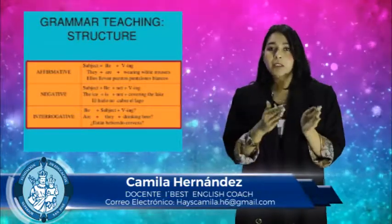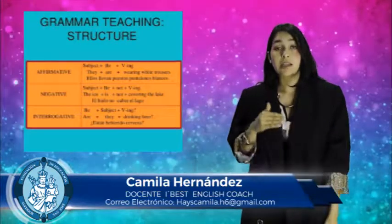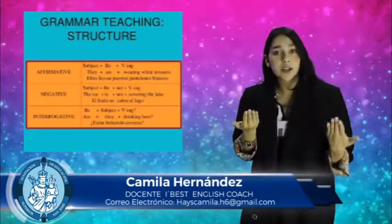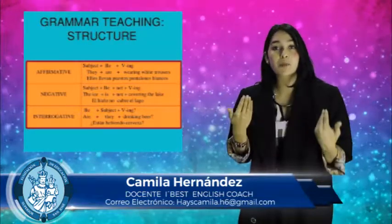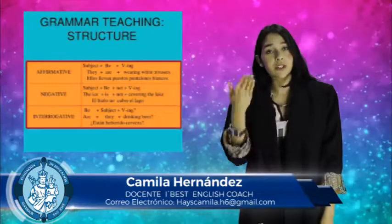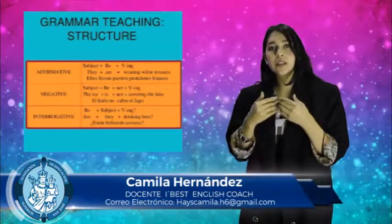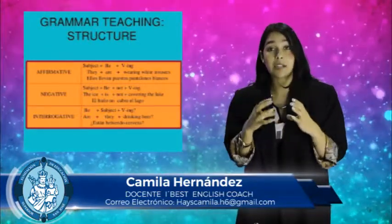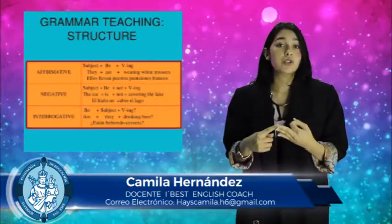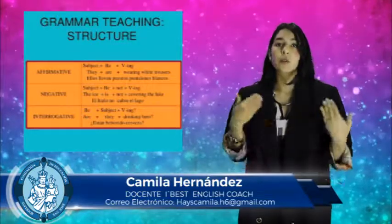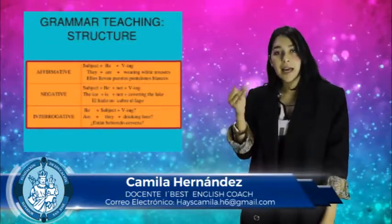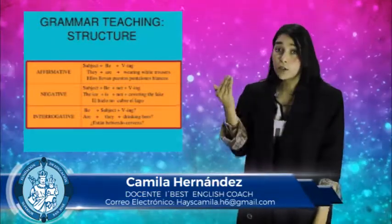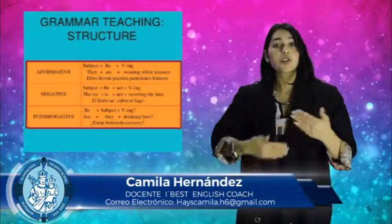So what are those characteristics? Subject plus verb to be — that is 'is' or 'are' — and the verb with '-ing'. You can't forget that it is important that you use 'is' or 'are'. If you don't add the 'is' or 'are', you cannot use the verb with '-ing'. So again, the structure is: subject plus verb to be ('is' or 'are'), the verb with '-ing', and also the complement.